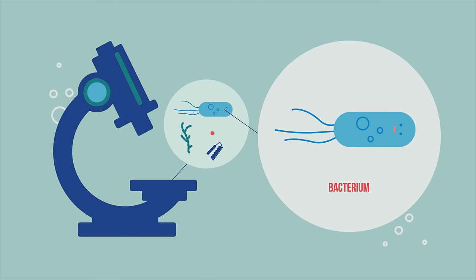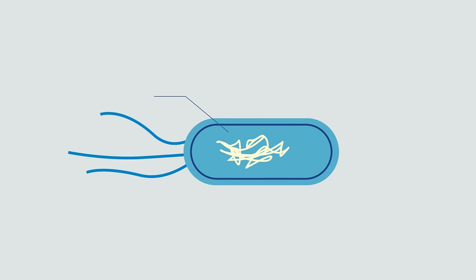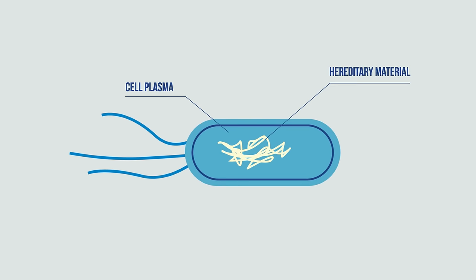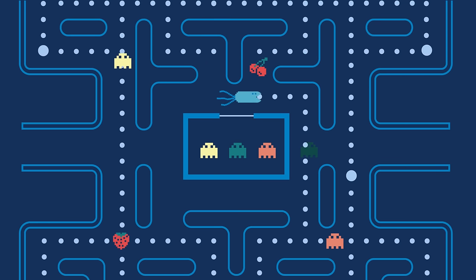Bacteria, unlike viruses, have cell plasma and are capable of independent metabolism. They do not need a host to reproduce. When they have taken up sufficient nutrients, they simply split in two.